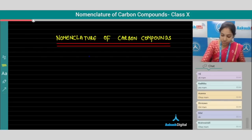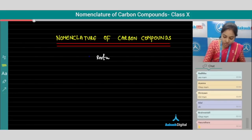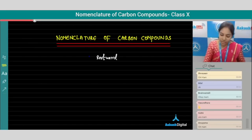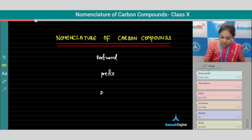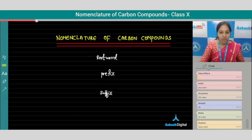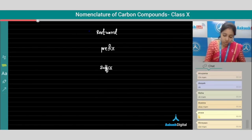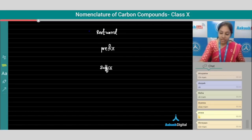For naming a carbon compound, we require a root word — that is the number of carbon atoms present in the compound — a prefix which indicates the substituent that is present, and a suffix which indicates the presence of a functional group. To understand prefix and suffix, let me give you an example.